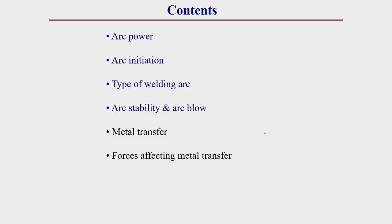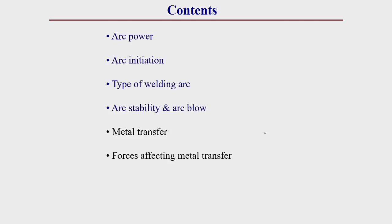Our present topic is on physics of welding. Last class I was discussing about welding arc power and how to optimize the arc power and arc length, which I discussed in detail. Today the following topics will be covered: arc power and how to optimize it — I will also solve another problem on arc power — then how to initiate the arc, the different types of welding arc, and at the end arc stability and arc blow.